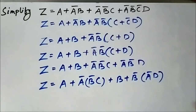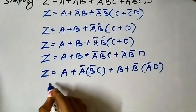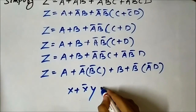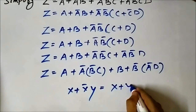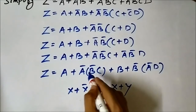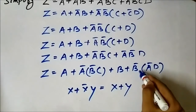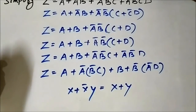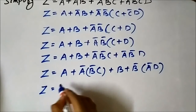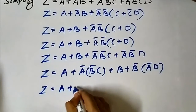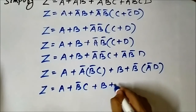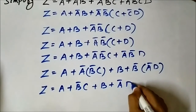Applying the rule x + x̄y = x + y: for a + āb̄c, taking a as x and b̄c as y gives a + b̄c. For b + b̄·(ād), taking b as x and ād as y gives b + ād. So z = a + b̄c + b + ād.